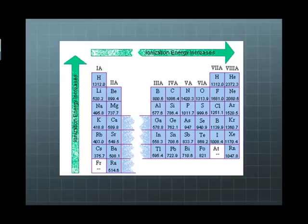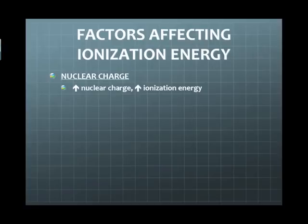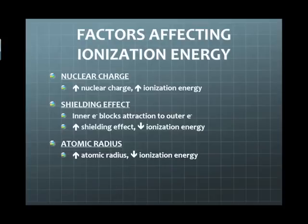That electron is more easily removed because it's at a greater distance from the nucleus. Now, let's look at all the factors which affect ionization energy. First, nuclear charge: the greater the nuclear charge, the greater the ionization energy — this happens across a period. Second, the shielding effect: as we increase the number of energy levels going down a group, we decrease the ionization energy. Third, atomic radius: as the atomic radius gets bigger going down a group, the ionization energy will also decrease.